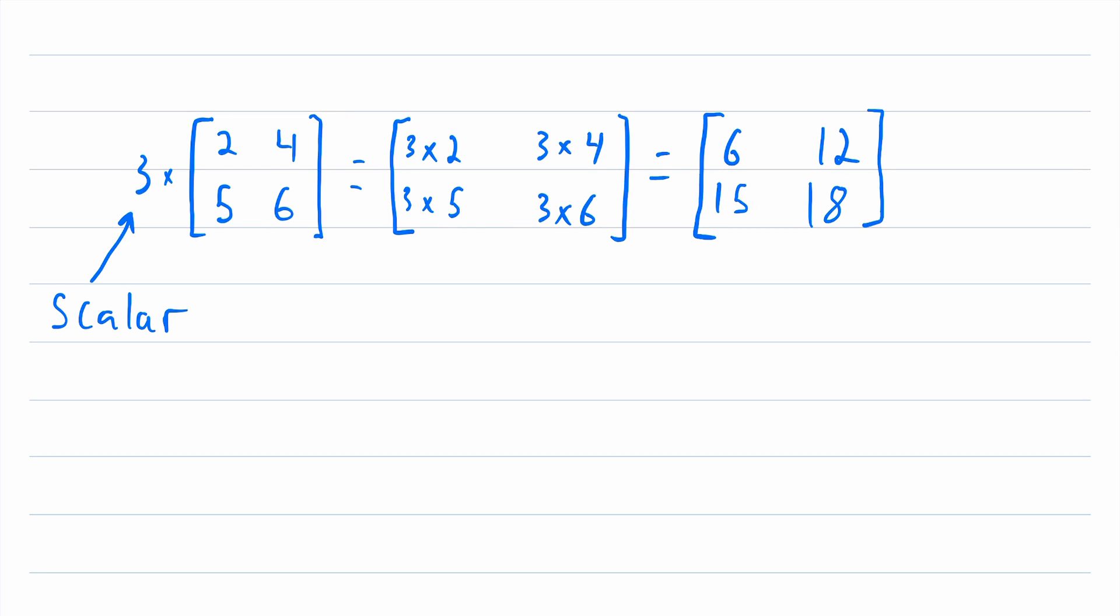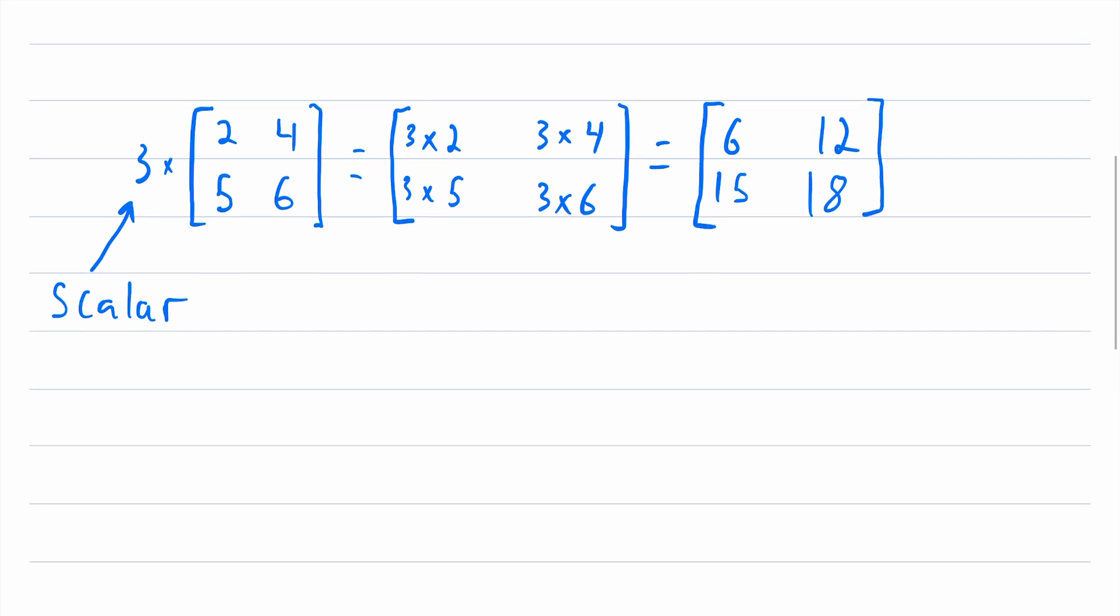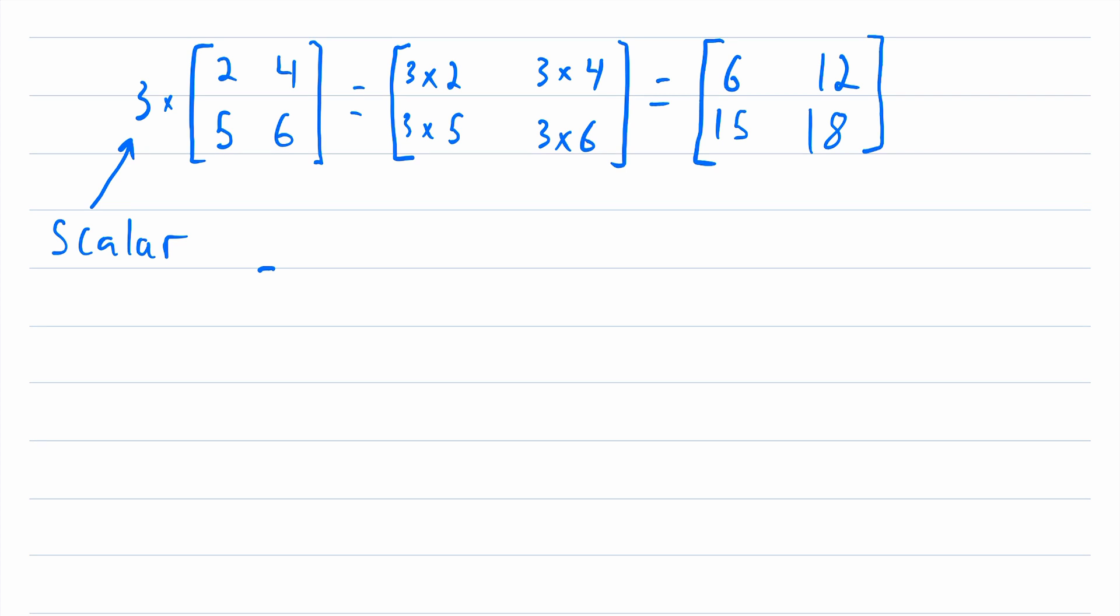And I'll also point out that the order does not matter, it's pretty natural to put the scalar before the matrix. But you could also put the scalar after the matrix. For example, let's say we had this three by one matrix with entries 1, 2, 3. And we could multiply it by a scalar of negative two. And this would work just the same way, we multiply each entry in the matrix by the scalar of negative two.